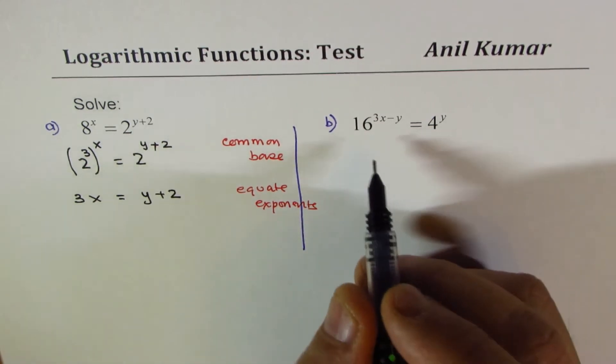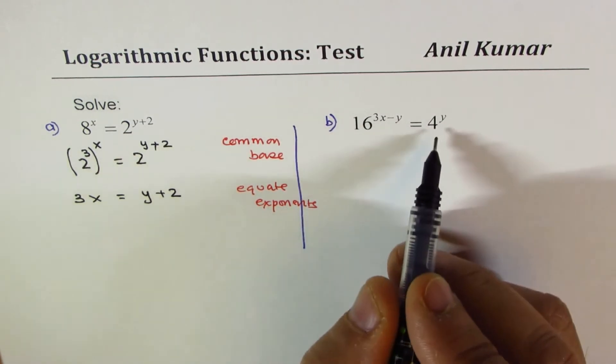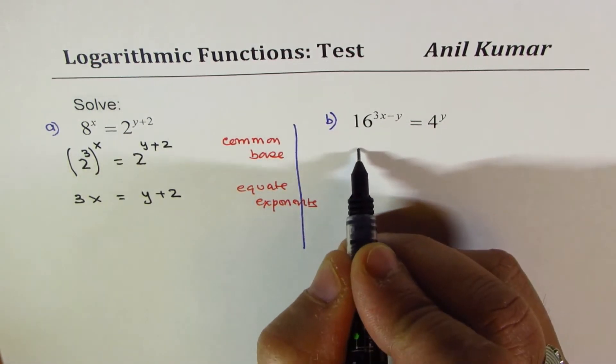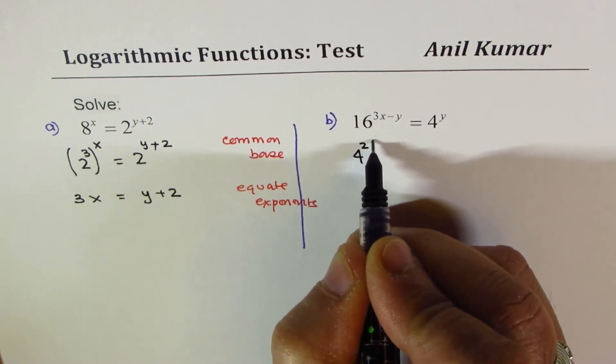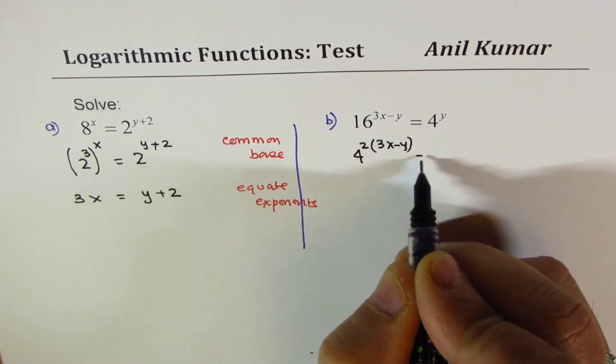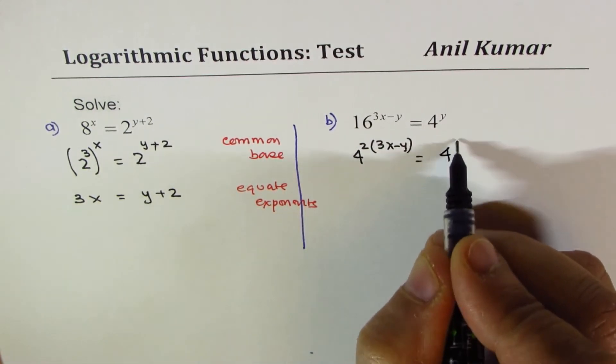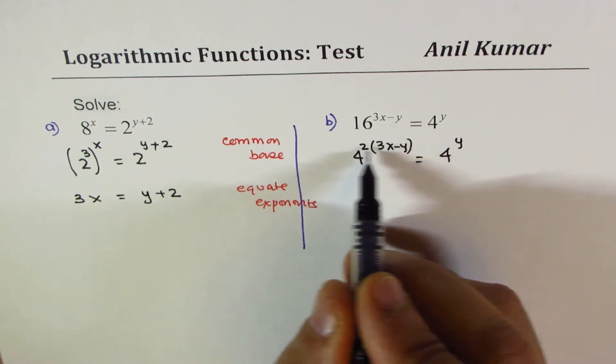16 to the power of 3x minus y, I could write this as, well, 4 is the common base. We could write this as 4 squared times 3x minus y. So I've combined two steps here: the power rule has been applied, and we have 4 to the power of y.